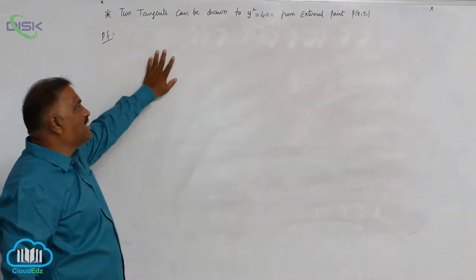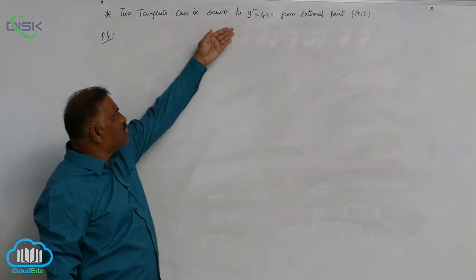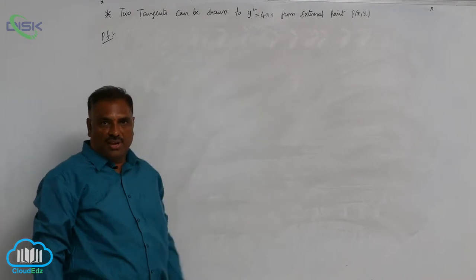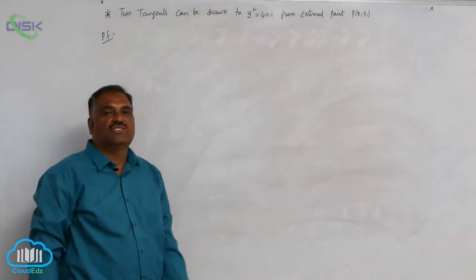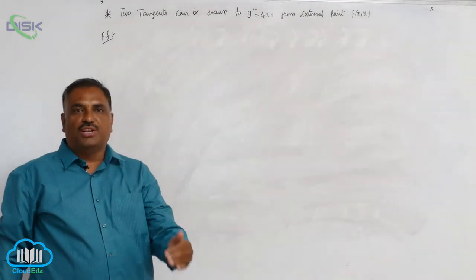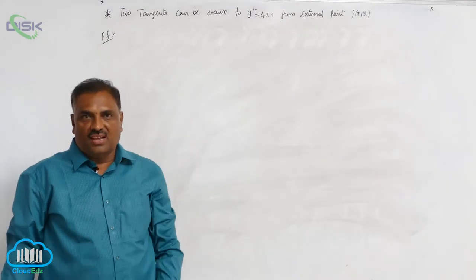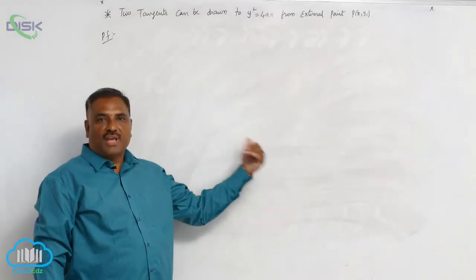We will discuss an important result. Two tangents can be drawn to a parabola from an external point. Even in the case of circles, we know that from an external point two tangents can be drawn to a circle. Now we will prove this for a parabola as well.